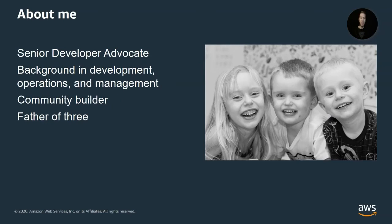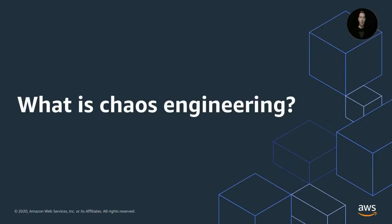A short note about me: I'm a Senior Developer Advocate at Amazon Web Services. My background is in development, operations, and management within IT, and I've been in the industry for about 20 years. I work a lot with communities in the Nordics of Europe, organizing and speaking at different events, particularly around serverless applications. And I have three kids at home, which I think is the reason why I got into chaos engineering in the first place.